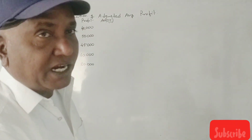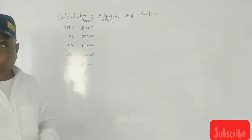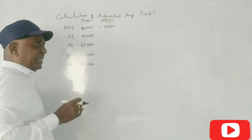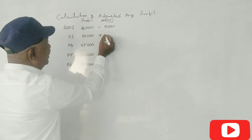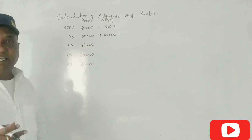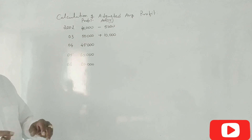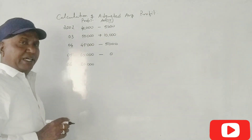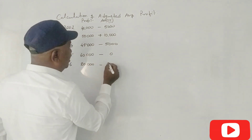In 2002, abnormal profit was included, so we deduct it — minus 5,000. In 2003, abnormal loss was charged, so we add it back — plus 10,000. In 2004, insurance premium of 5,000 was excluded, so we deduct it — minus 5,000. In 2005, there is no adjustment. In 2006, profit on sale of building of 20,000 was included, so we deduct it — minus 20,000.